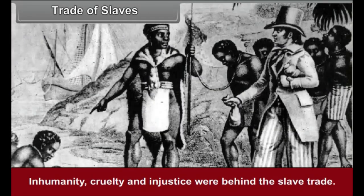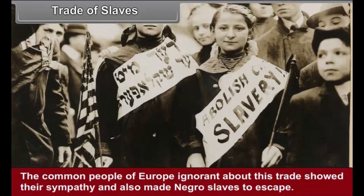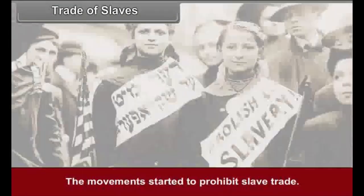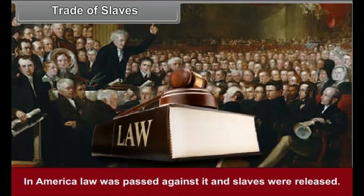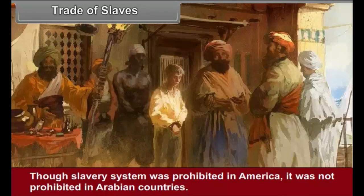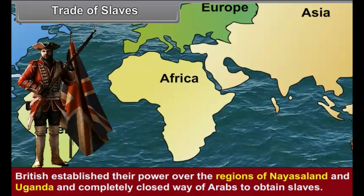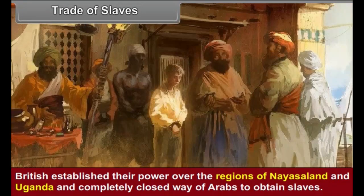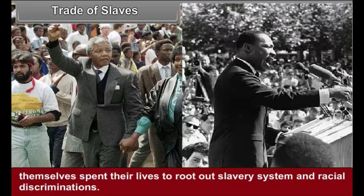Inhumanity, cruelty and injustice were behind the slave trade. The common people of Europe, ignorant about this trade, showed their sympathy and helped Negro slaves to escape. Movements started to prohibit slave trade. In America, law was passed against it and slaves were released. Though slavery was prohibited in America, it was not prohibited in Arabian countries. British established their power over the regions of Nyasaland and Uganda and completely closed the way for Arabs to obtain slaves. Thinkers during the period of Martin Luther King and Nelson Mandela spent their lives to root out slavery and racial discrimination.